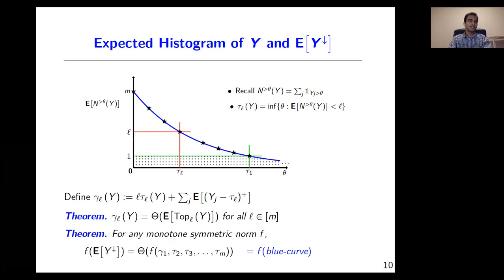Here's a fascinating result showing that the blue curve encodes a lot of information about the expected sorted y-vector. The gamma-L function is a constant-factor proxy for the expected top-L norm of Y for all L. In fact, we can see something even stronger: for any monotone symmetric norm f, the f-norm of the expected sorted vector is within a constant factor of the f-norm of the blue curve. Here we use the term 'blue curve' to denote the vector that has gamma-1 in the first entry — which is the area of the dotted region in the figure — and the remaining coordinates are tau-2, tau-3, and so on up to tau-m.